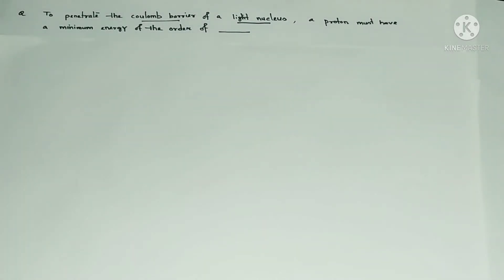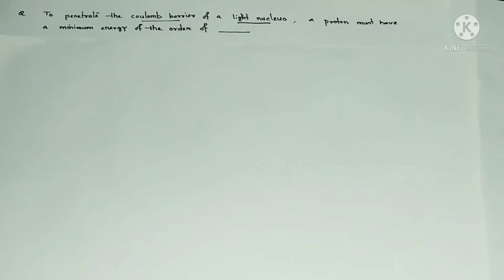Hi everyone, this is a question from particle and nuclear physics. The question says: in order to penetrate the Coulomb barrier of a light nucleus, a proton must have a minimum energy of what order? In order to penetrate the barrier provided by the light nucleus, the proton should have how much minimum energy? To solve it, we need to know the Coulomb barrier provided by the light nucleus.